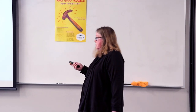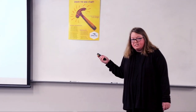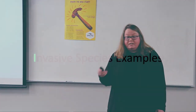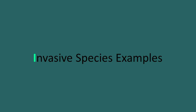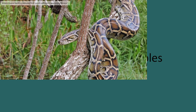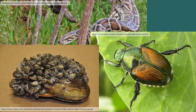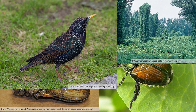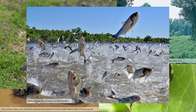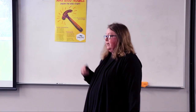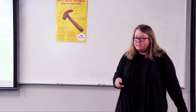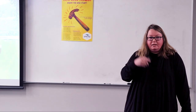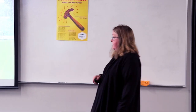Here are a handful of examples of invasive species in North America: the Burmese python, the Japanese beetle, kudzu, zebra mussels, the starling, and the Asian carp. All of these are a small list of a very long list of species that we have enabled to move into new ecosystems.